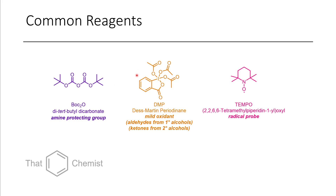Next we have this iodine(V) compound called DMP. DMP has become a popular method for synthesizing aldehydes and occasionally ketones in recent years. You just add your alcohol with DMP in a common solvent, and essentially the only byproducts are acetic acid and degraded products derived from DMP. It's a nice reaction — very mild and very selective.